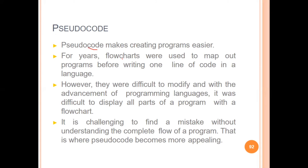For years, flowcharts were used to map out programs before writing one line of code. However, they were difficult to modify, and with the advancement of programming languages it was difficult to display all parts of the program with a flowchart. It's challenging to find a mistake without understanding the complete flow of the program — that is where pseudocode becomes more appealing.